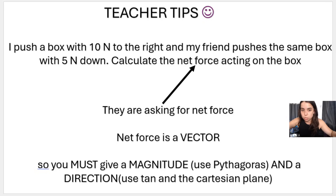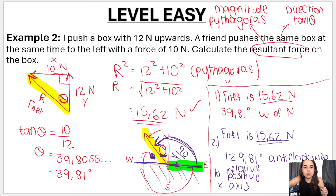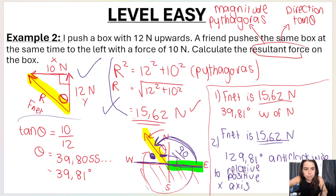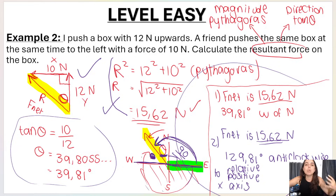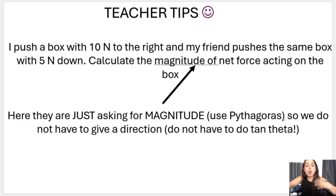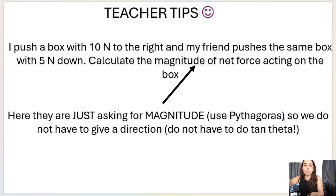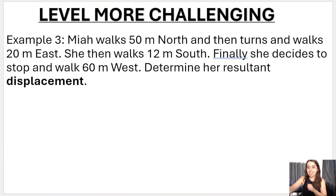Teacher tips: if the question asks for net force — a vector — you must give both magnitude and direction. Many students draw the diagram and do Pythagoras but stop there without doing tan theta and stating the direction. However, if the question says 'calculate the magnitude of the net force,' then you only need Pythagoras. In the next video we'll do a slightly more challenging example.